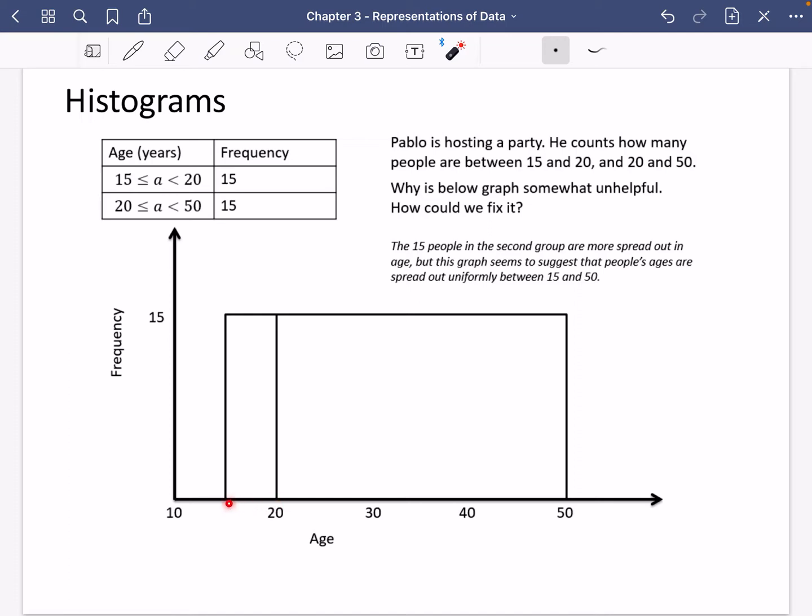So what we've done here is we've put the gap between 15 and 20, we've said that there were 15 people, and we've put the gap between 20 and 50, and we've said it's 15 people. So this is not a good graph, because the 15 people in the second group that we've got here, they're more spread out in age. But this graph seems to suggest that people's ages are spread out uniformly between 15 and 50, because it's the same kind of height all the way across. It looks like the distribution of ages is just equal, but it's clearly not. There's clearly a much higher density of people in this 15 to 20 group.